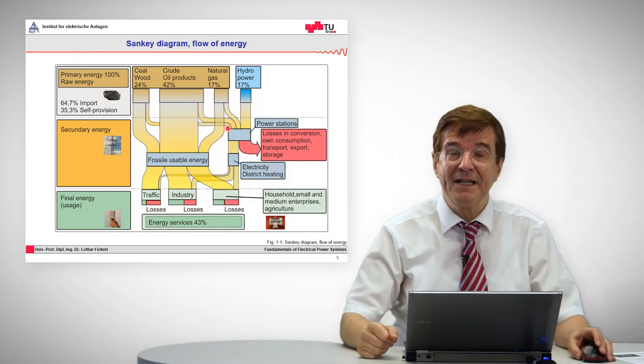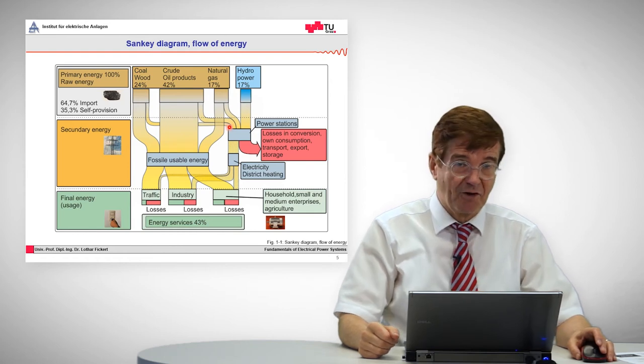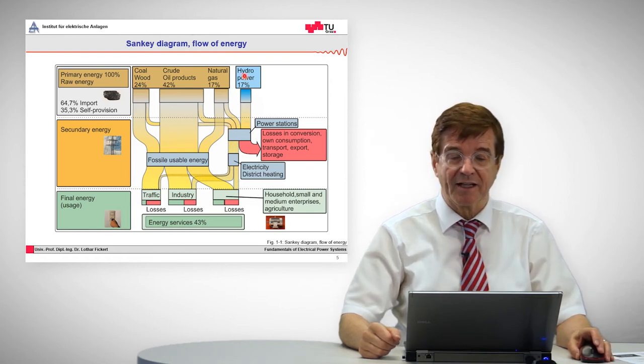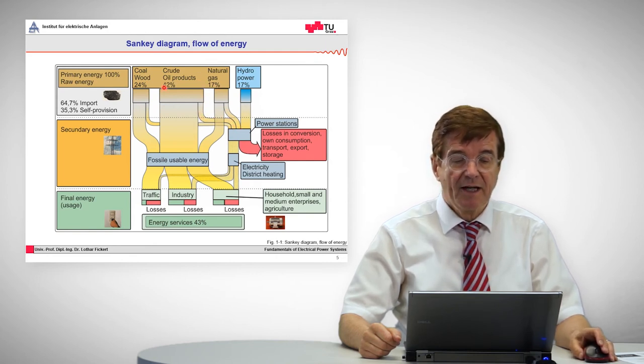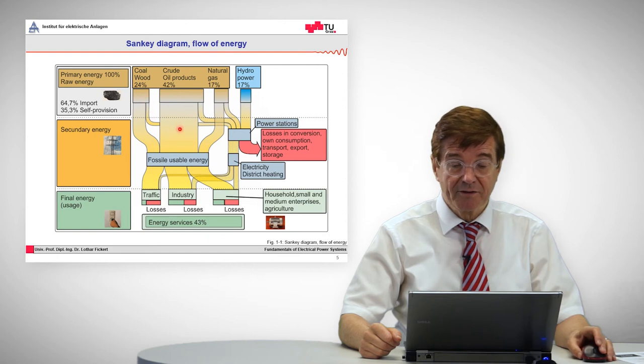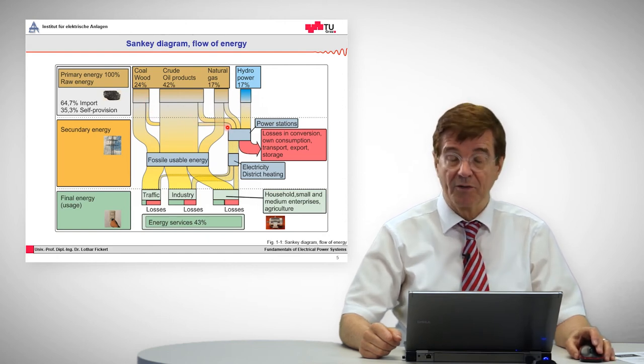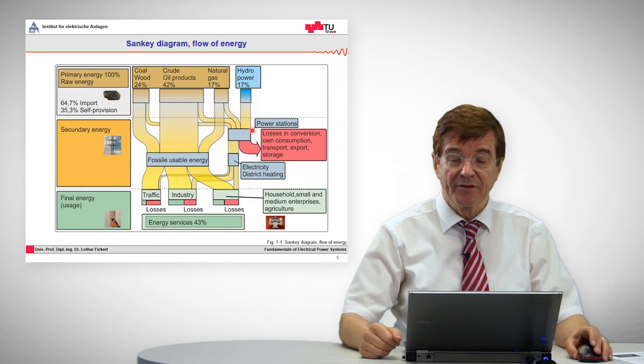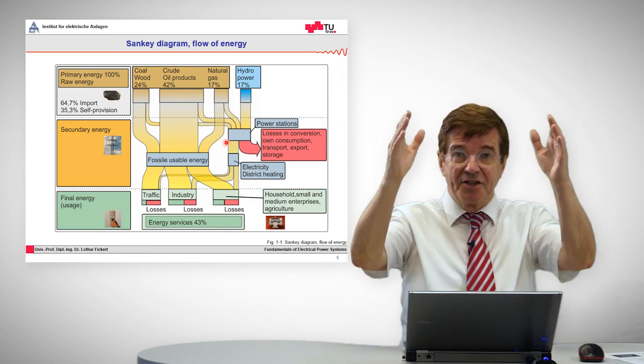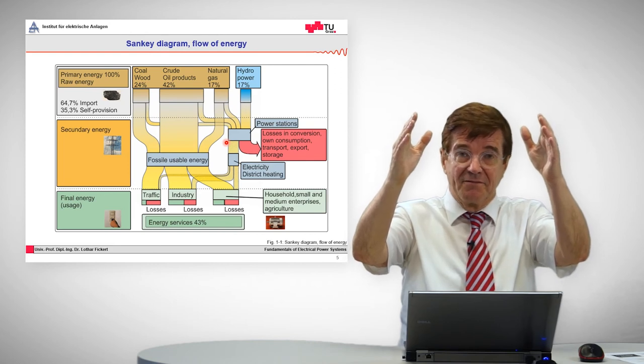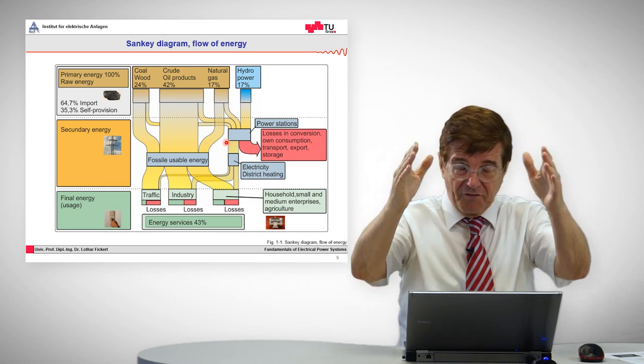The electrical power system needs an input from other forms of energy like hydropower, natural gas, oil products, and also biomass, which is given as coal and wood, for example, into the power stations. In the power stations, the energy is converted.